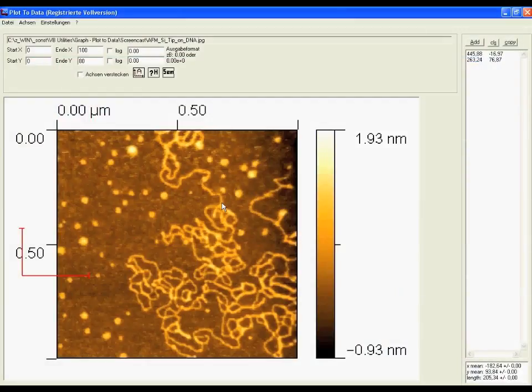Here we have an AFM image with DNA filaments and we want to know how thick are they. For example, we don't have the AFM data because we copied the picture from a paper, from a journal or we scanned it. But we have the scale over here. So this is how we do.